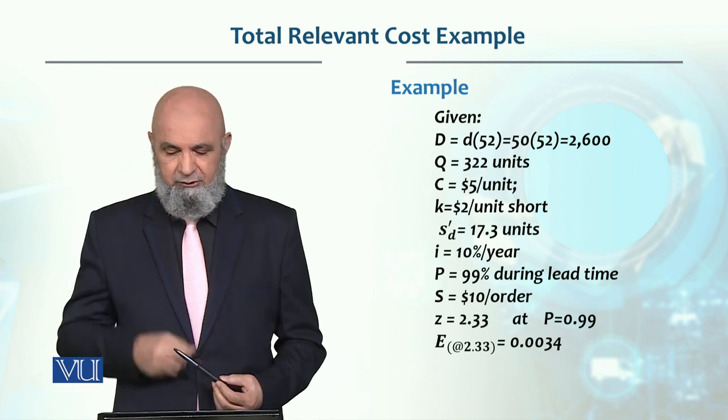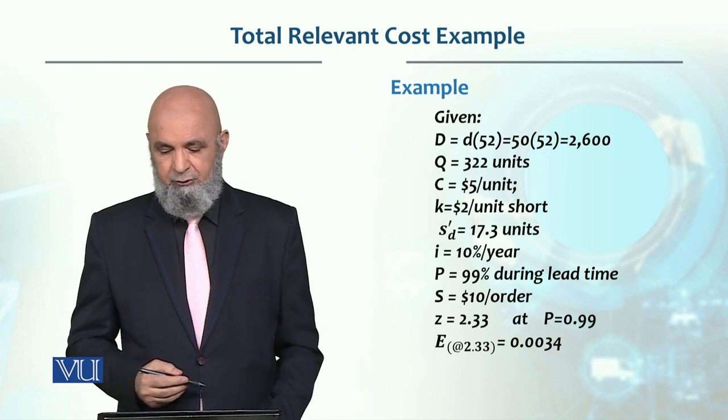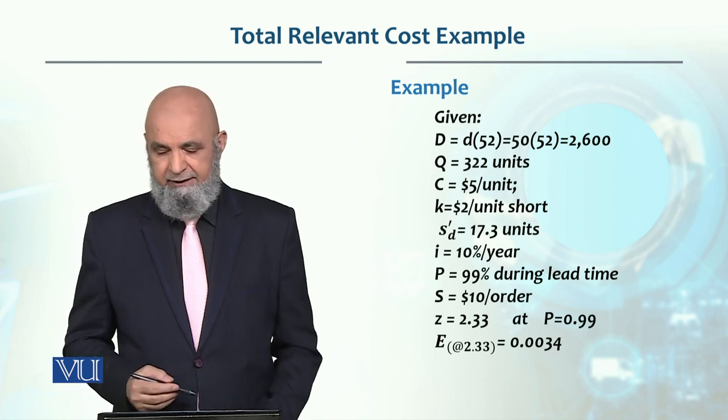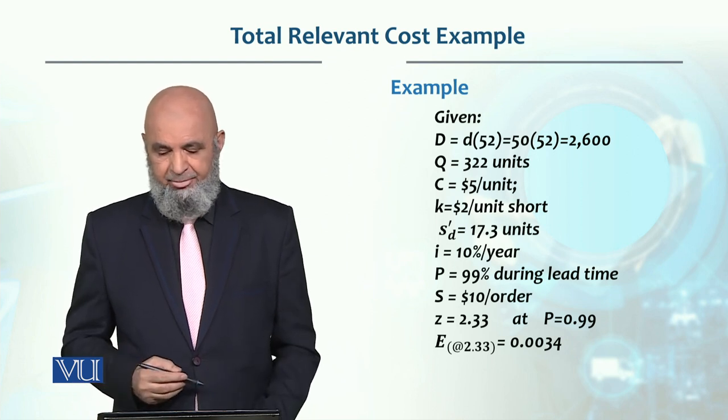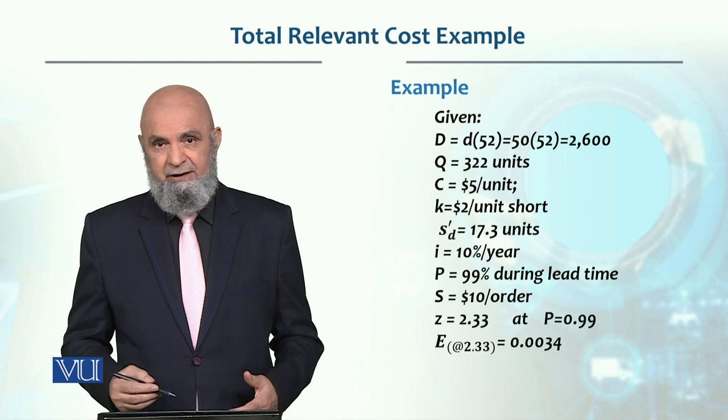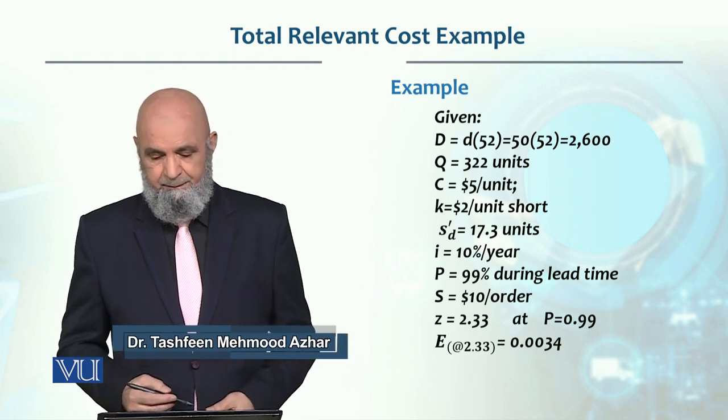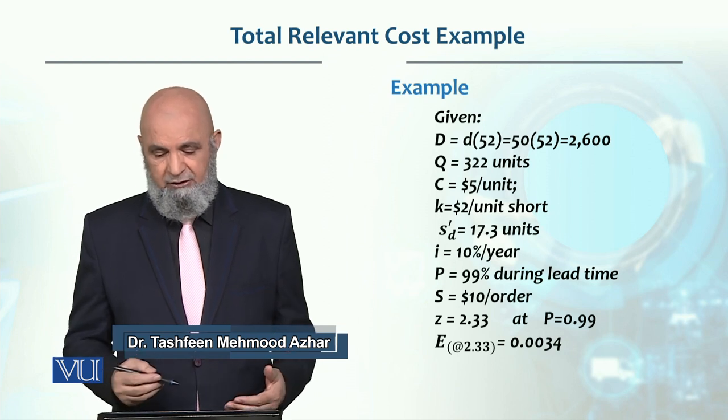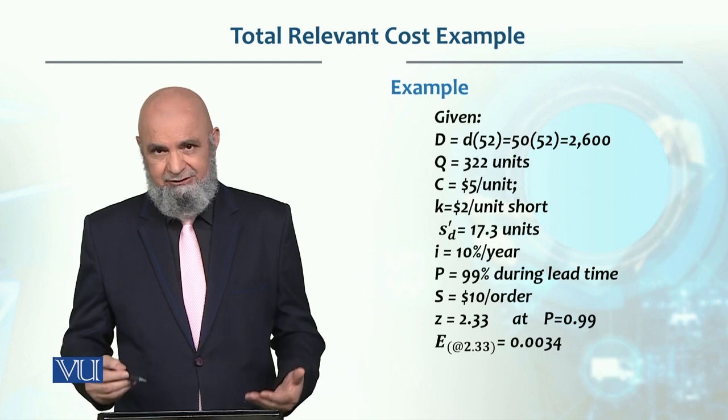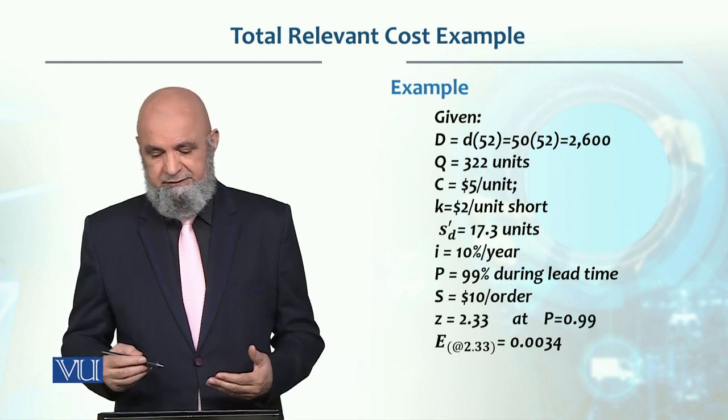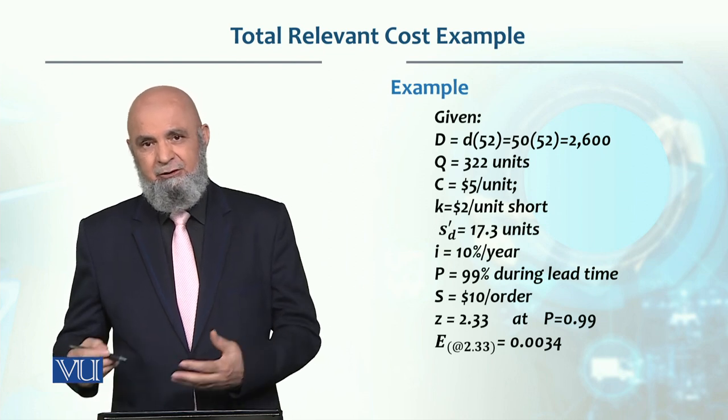The ordering quantity we have used EOQ and solved it, so it was 322 units. Unit cost is $5 per unit. K is your stockout cost, which is $2 per unit short. Per unit short means per unit stockout.